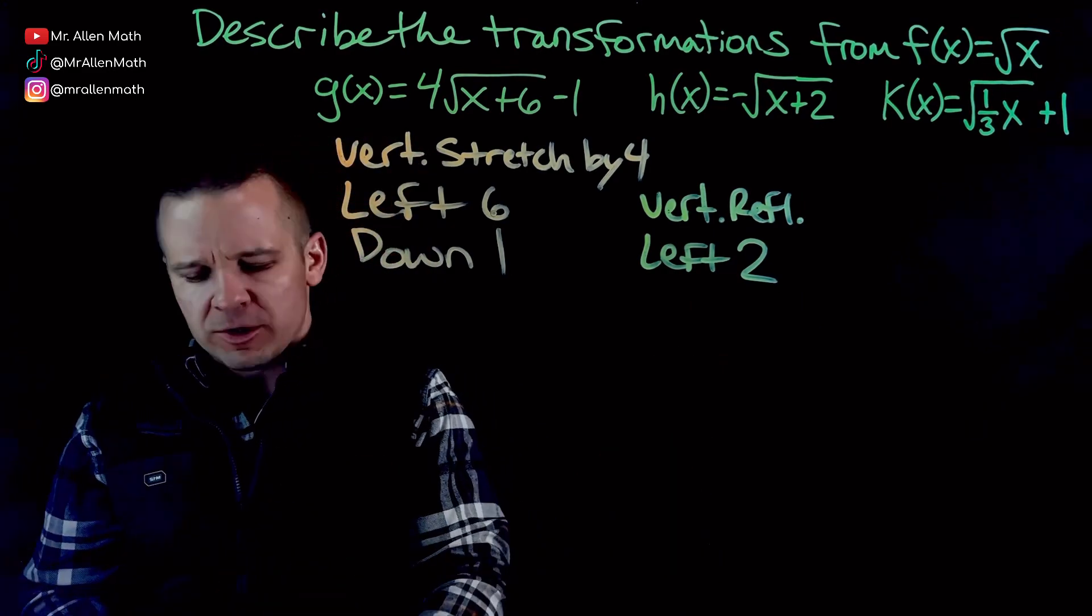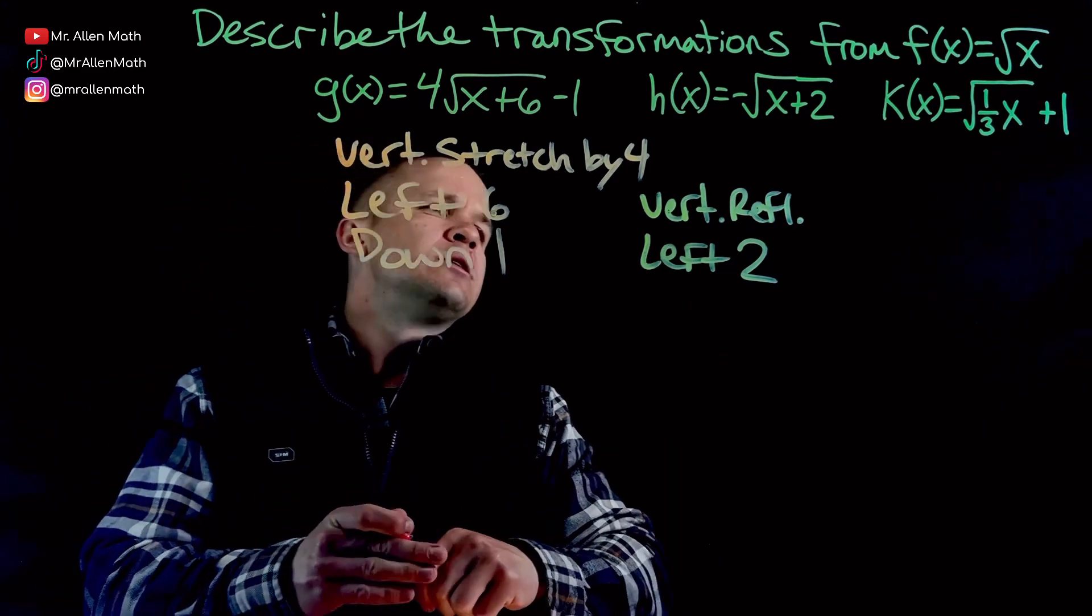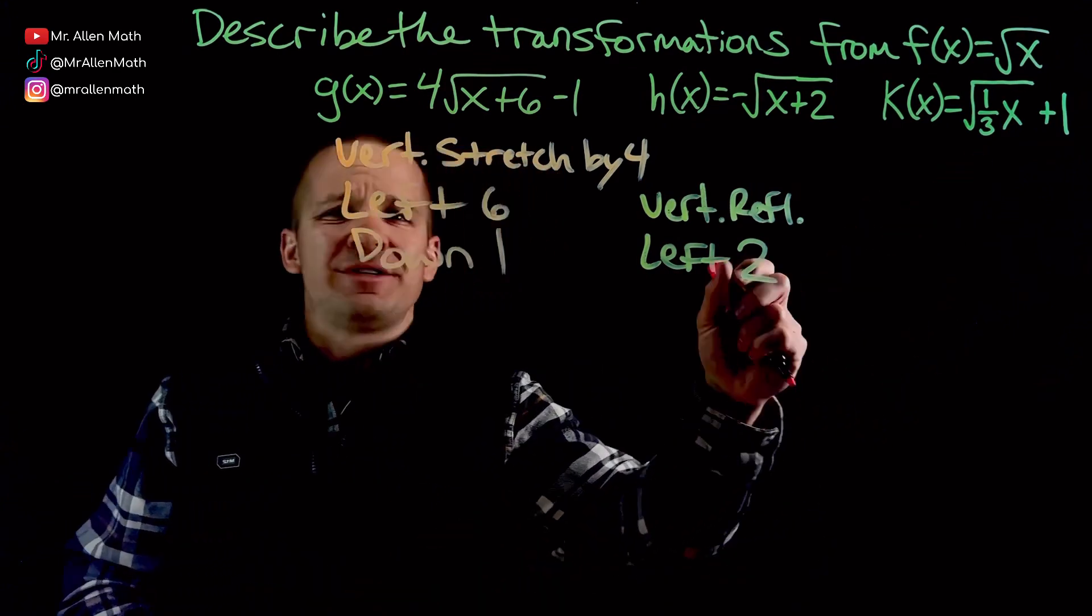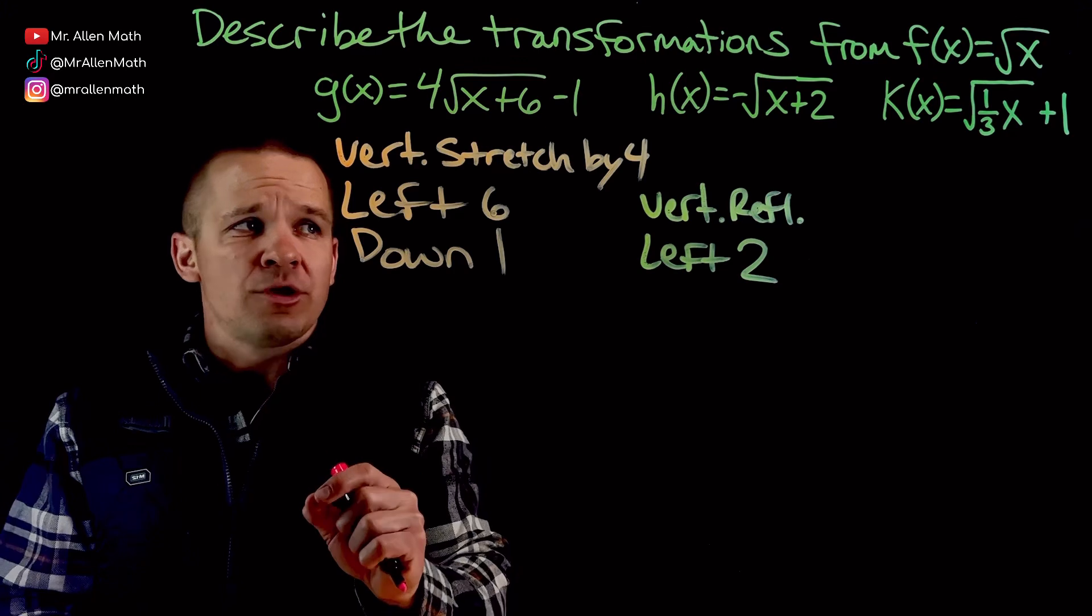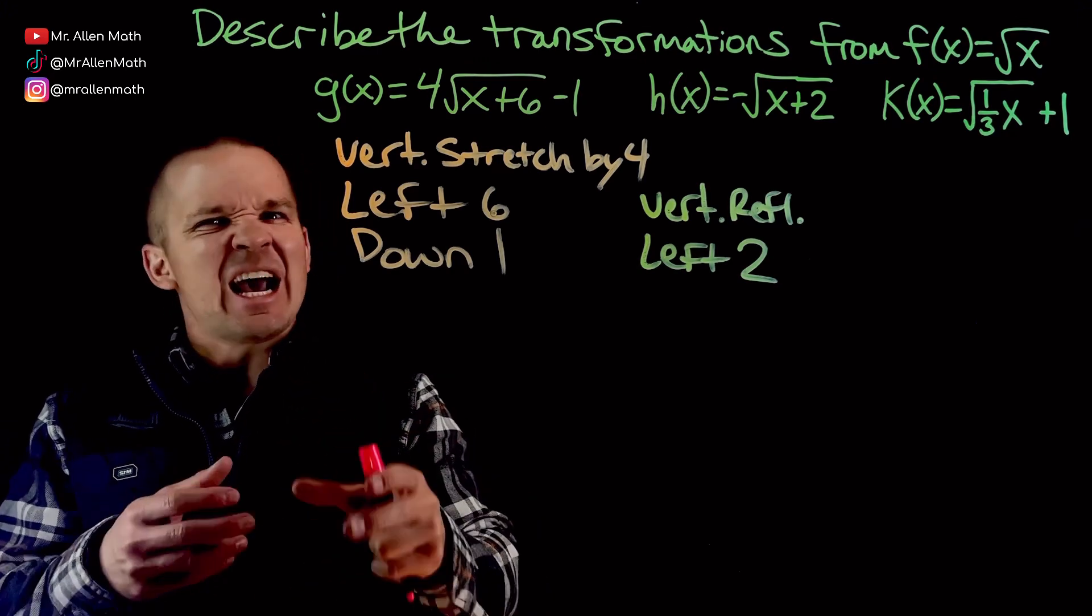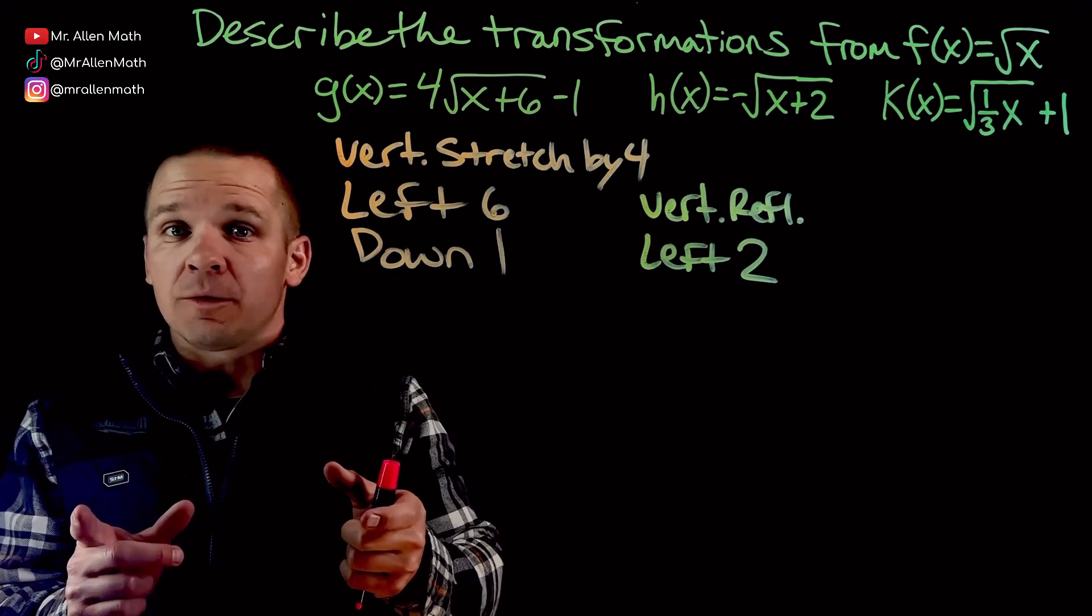Last one over here. I might do a bonus one, though. I'm feeling a little spicy. So on the inside here, we've got one-third times x. So it's horizontal. It's either a compression or a stretch. Remember how we said on the inside, it's kind of the opposite of what you'd think? Same goes with multiplication.